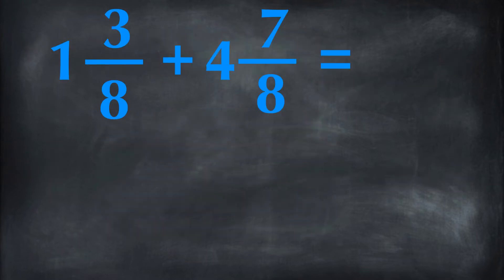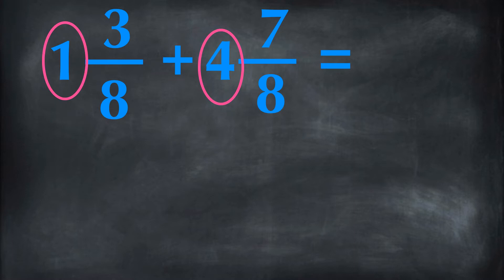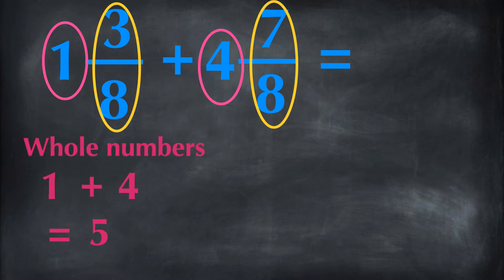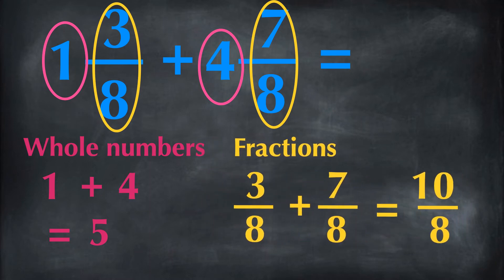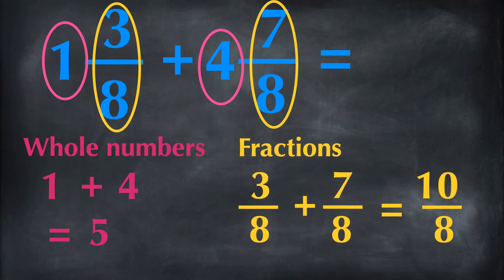This is a summary for the quick addition of fractions. When we add fractions, first we add the whole numbers together, then add the fractions together. We have 1 and 4 in the whole numbers. 1 plus 4 is 5.